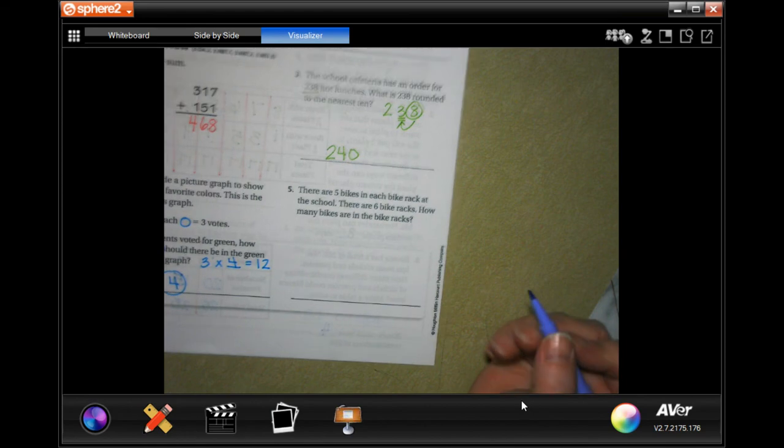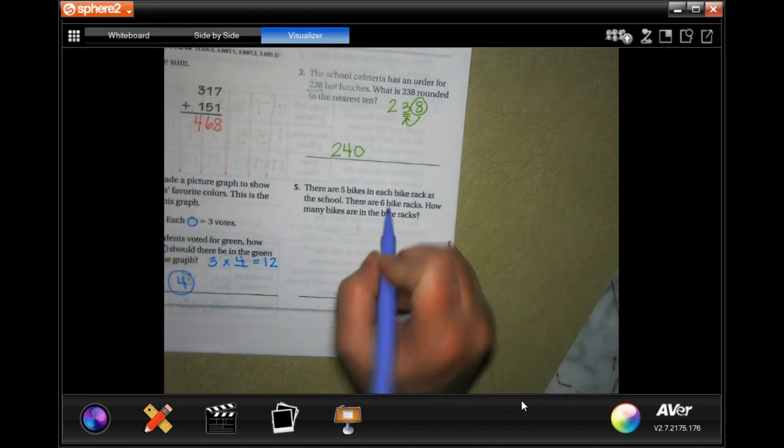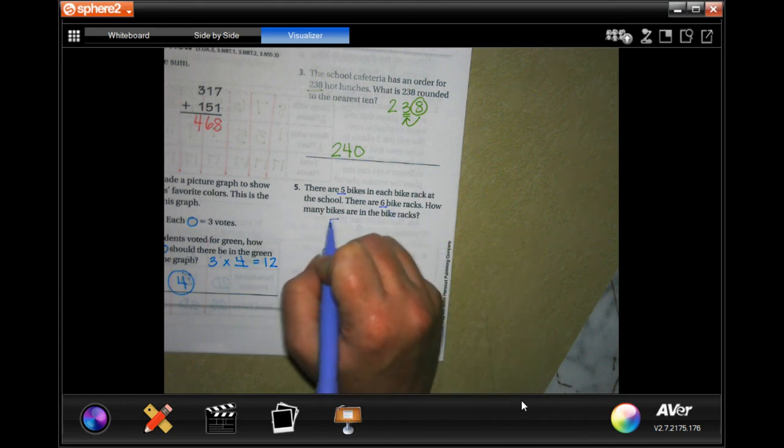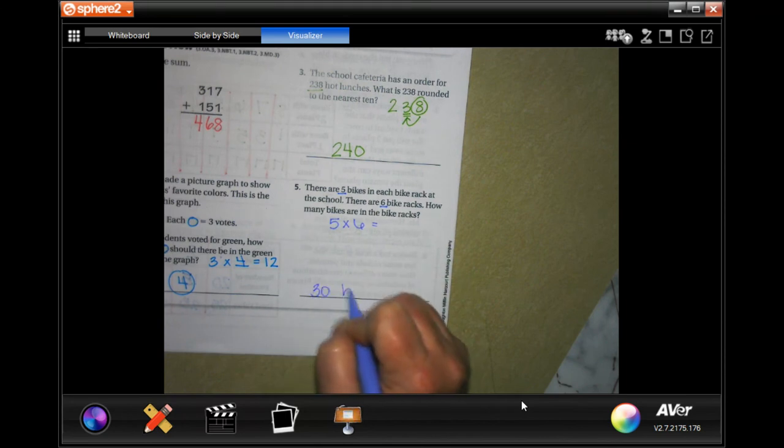Last but not least, there are five bikes in each bike rack at the school. There are six bike racks. How many bikes are in the bike racks? Five times six? Well, that's 30 bikes.